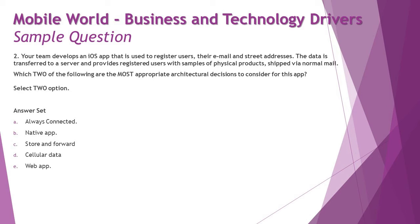The options available are: always connected, native app, store and forward, cellular data, and web app. For architectural decisions, we need to recall our learning. Option A — always connected — is really not necessary here because the user only needs to connect when inputting information. Since the user can work offline and the samples are sent out via physical shipping, a delay between registration and arrival of the sample is present anyway. So always connected is not the right architectural option.